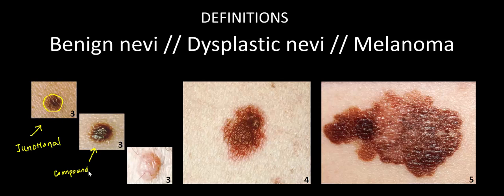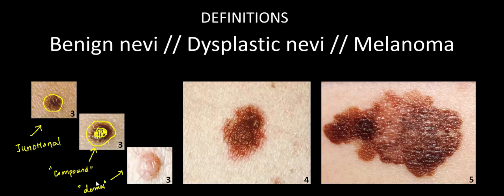The second type, shown in the center, are known as compound nevi. This compound characteristic is due to a central elevation in the lesion with the more macular-appearing lesion on the outer edges — having these two characteristics makes it compound. Histologically, the melanocyte clusters are at the dermal-epidermal junction but also in the dermis, giving it this nodular raised appearance in the center. The final type are dermal nevi, where melanocyte clusters are located primarily in the dermis, giving a very nodular raised appearance and a lighter pigmented tone.